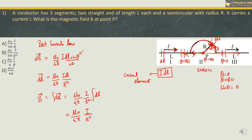The total length of a semicircle is pi R. For a complete circle it is 2 pi R; for a semicircle it is pi R. Substituting, pi and pi cancel, R and R cancel, and the final magnetic field B equals mu0 I upon 4R. So the correct option is option C. Let us check out the next MCQ.